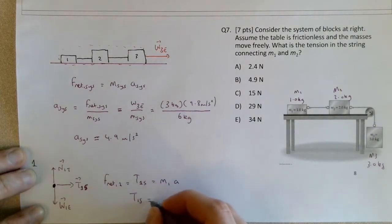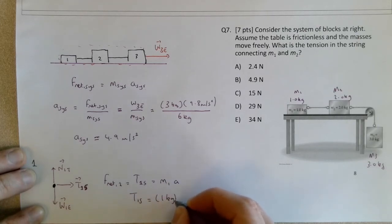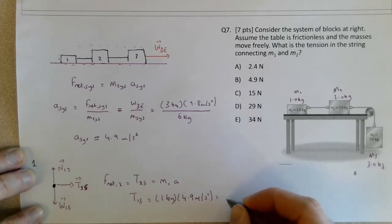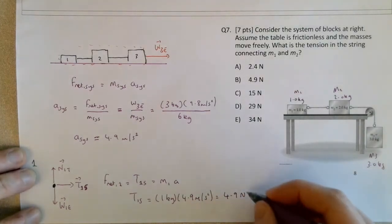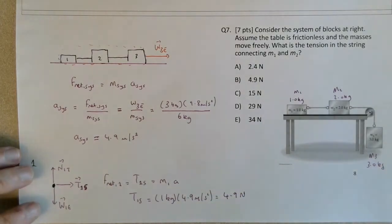So the tension in that string is 1 kg times 4.9 meters per second squared. That works out to be 4.9 newtons. So if there's a choice, then B is the correct answer.